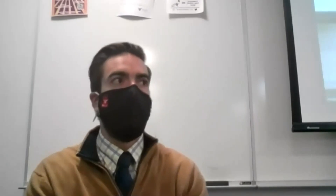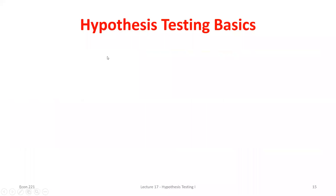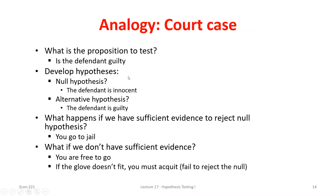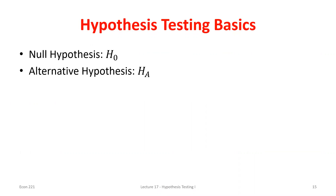We switched gears last class talking about hypothesis testing. We're going to be doing a lot of that over the next exam and even after, so make sure you stop me if you have questions. We left off using that court case analogy as a different way of thinking about hypothesis testing. We're not doing a court case example — we're trying to test for where the true population mean is. We have our null and alternative hypothesis: null is H subscript zero, alternative is H subscript A.